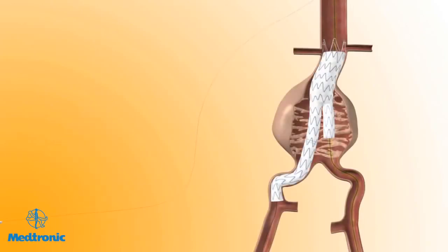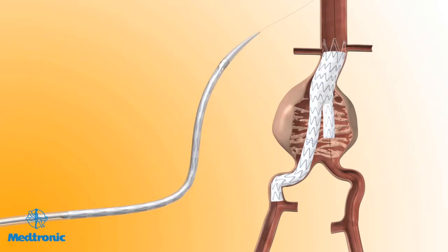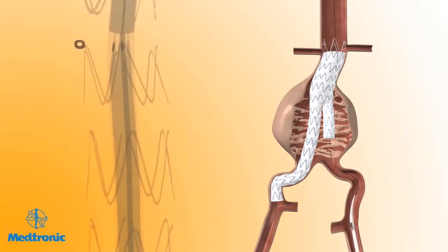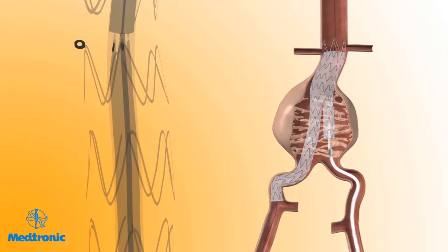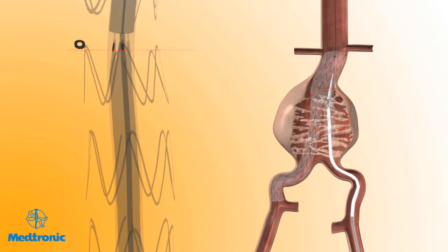On the patient's contralateral side, insert a guide wire through the contralateral stub leg and the aortic neck portion of the previously placed bifurcated stent graft. Place the Endurant Iliac Delivery System containing a contralateral limb over the guide wire. Wet the graft cover to activate the hydrophilic coating. Insert the delivery system into the vasculature and through the contralateral stub leg of the bifurcated stent graft. The radiopaque markers at the proximal end of the contralateral limb should be aligned to the radiopaque marker at the bifurcation of the bifurcated stent graft.